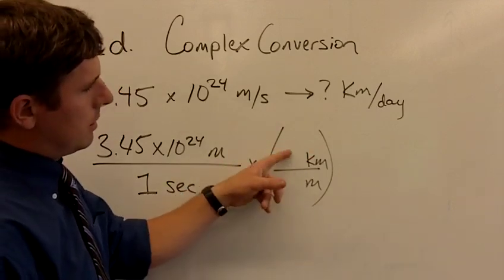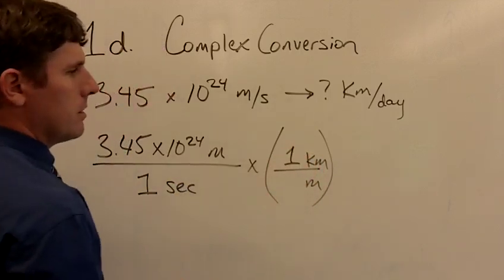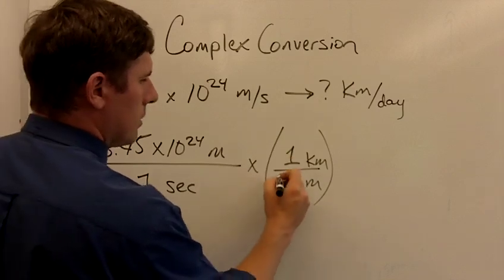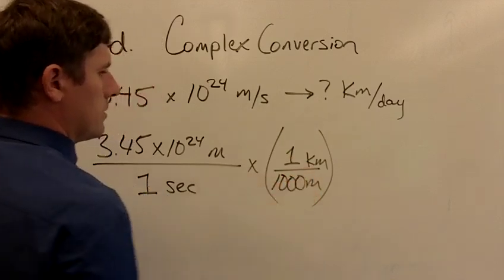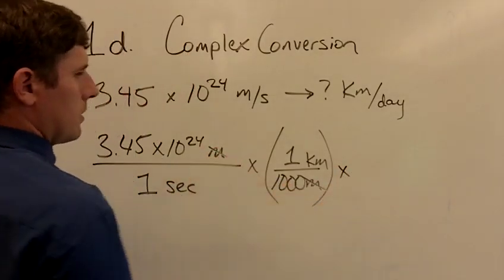I want to know which one's bigger, a kilometer or a meter, and I know that a kilometer is bigger so it gets a one next to it. How many meters are in one kilometer? Well, a thousand, because that's kilo. And then now when we do this, these meters will cancel.